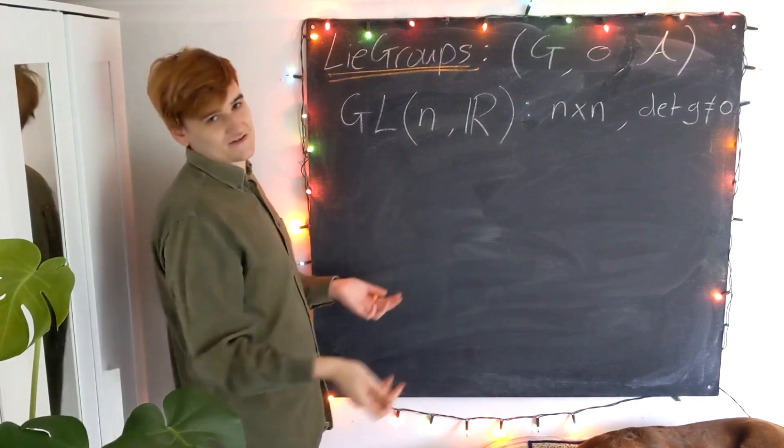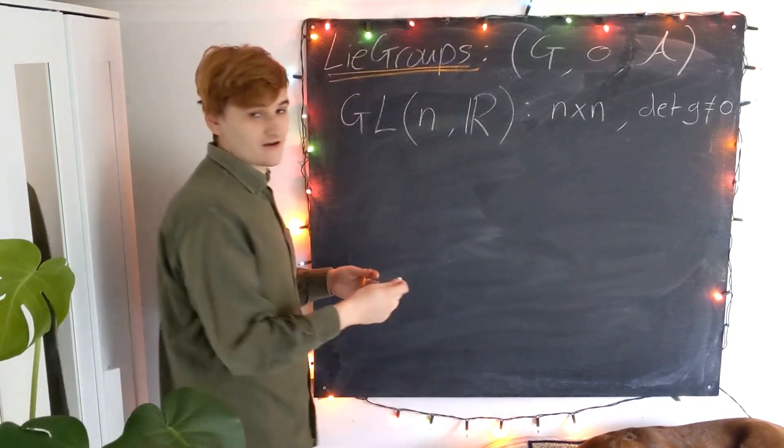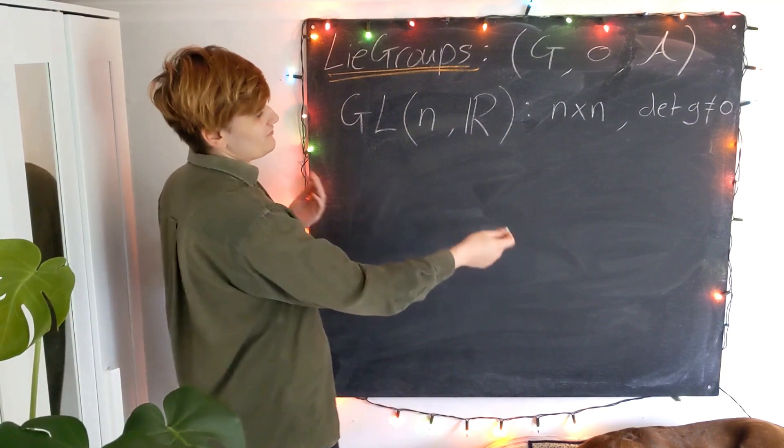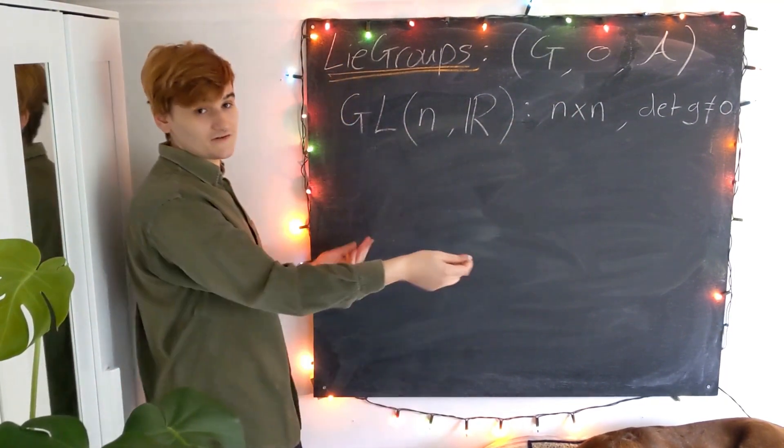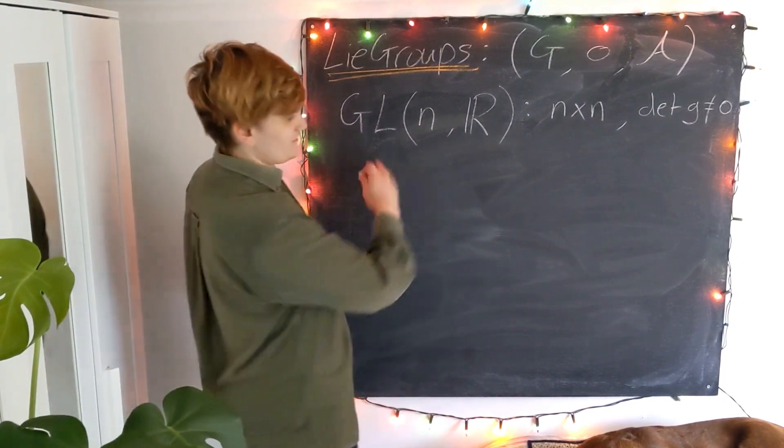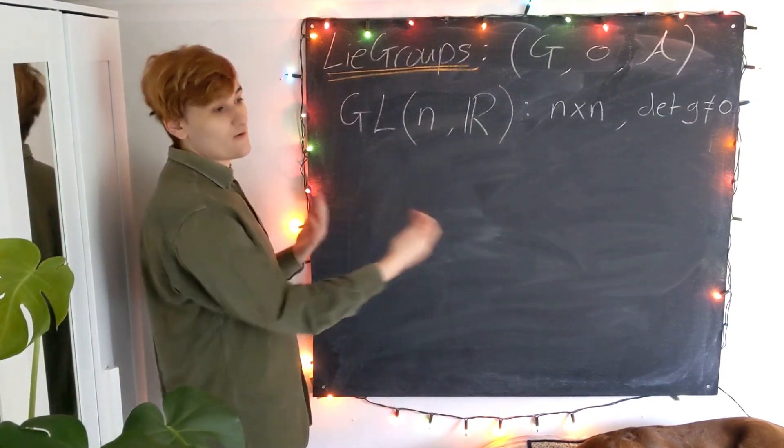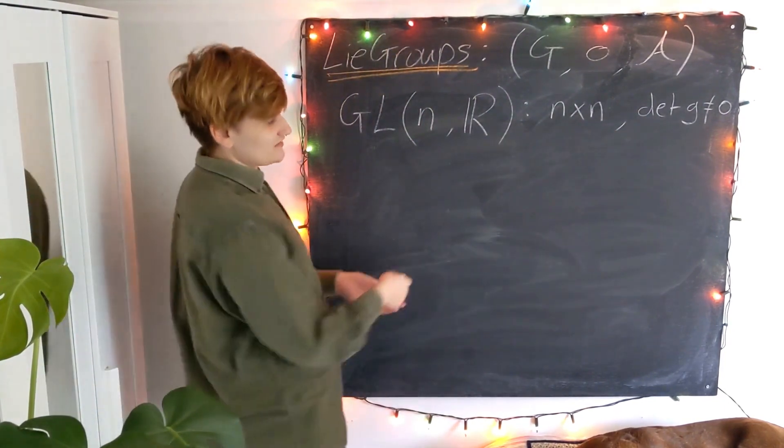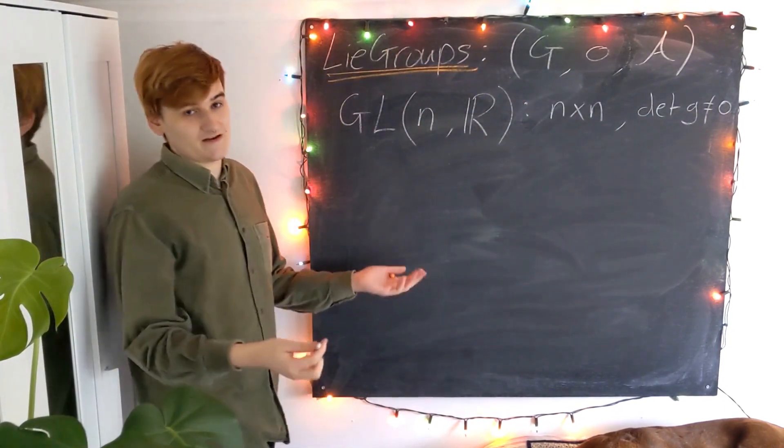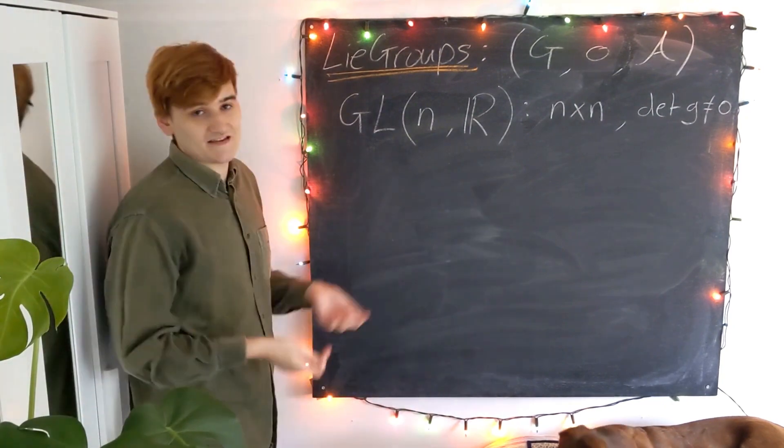And now you can convince yourself that we can compose matrices and they're also going to remain an n by n matrix, so our composition is closed. And then of course, the matrix multiplication we require to be invertible through this condition, so invertibility of the composition is satisfied, and then of course, we have the identity matrix.